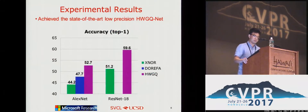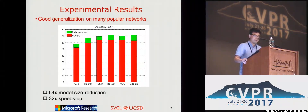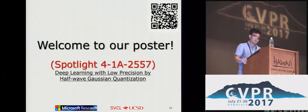With these three contributions, we achieved the state-of-the-art low-precision HWGQ-Net. It outperforms XNOR-Net and BNN by a large margin. Beyond AlexNet and ResNet-18, HWGQ has very good generalization on many popular networks. For all networks, HWGQ has very mild accuracy drop from the full precision networks, and there are no hyperparameters to tune. In addition, HWGQ enables 64 times model size reduction and 32 times speed up. The source code and models are available online. Thank you.